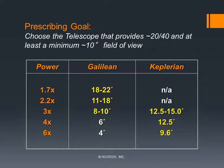As a result, Galilean optical design telescopes can provide adequate fields of view up to about 3x power, while Keplerian optical design telescopes are generally preferred in powers 3x and above.